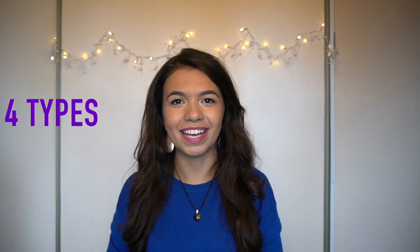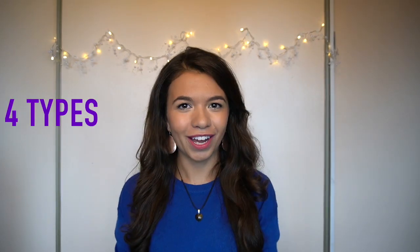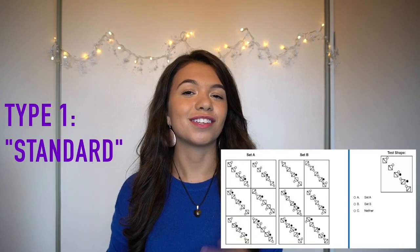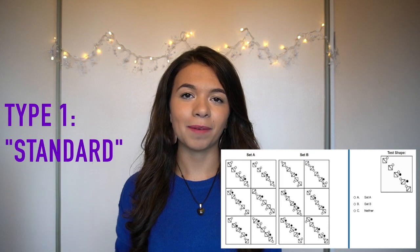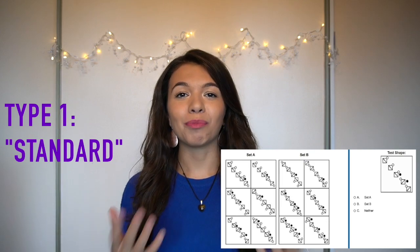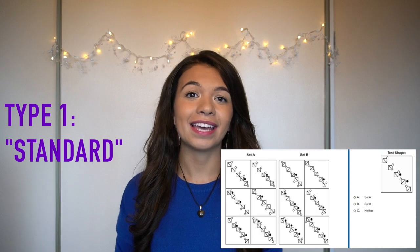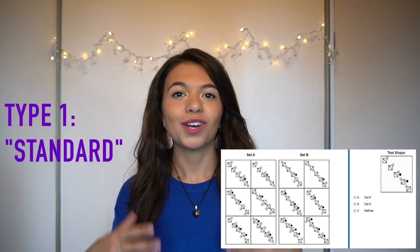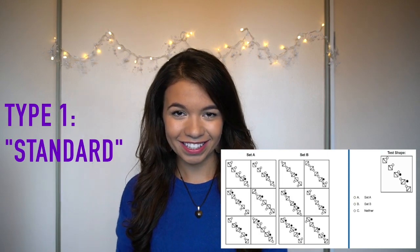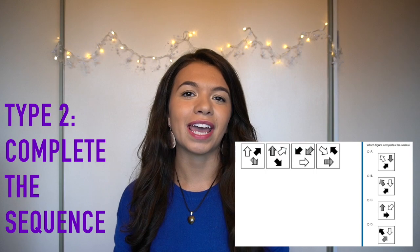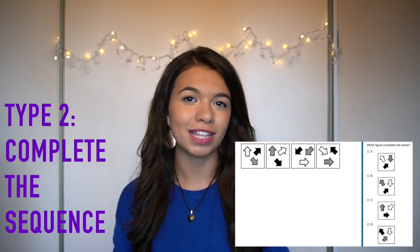There are four types of questions in abstract reasoning. The first type is the standard type in which you're given two sets — set A and set B — followed by a test shape, and what you need to do is decide whether the test shape belongs to set A, set B, or neither set.